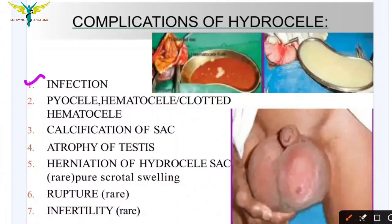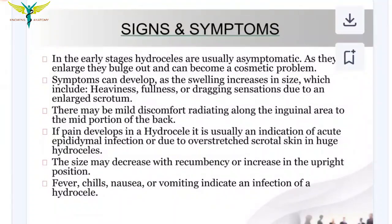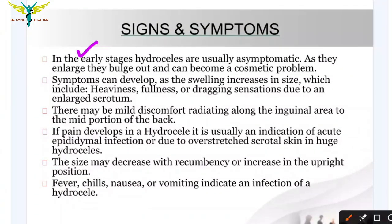Complications of untreated hydrocele include infection, pyocele (pus inside the scrotal cavity), hematocele (blood inside the scrotal cavity), clotted hematocele, calcification of the sac, atrophy of the testis, herniation of the hydrocele sac, rupture of the sac, and infertility.